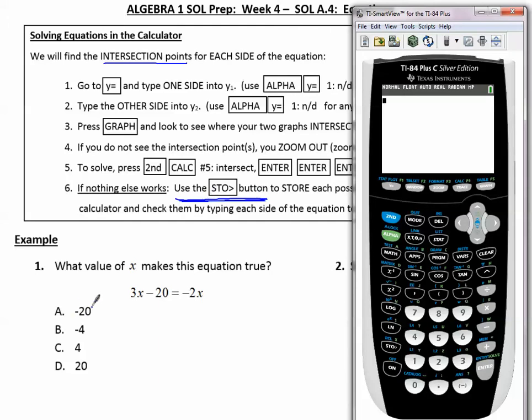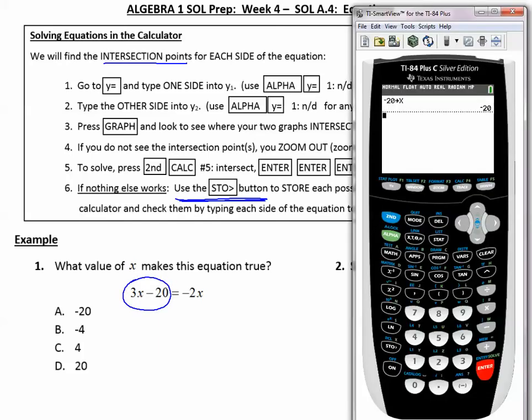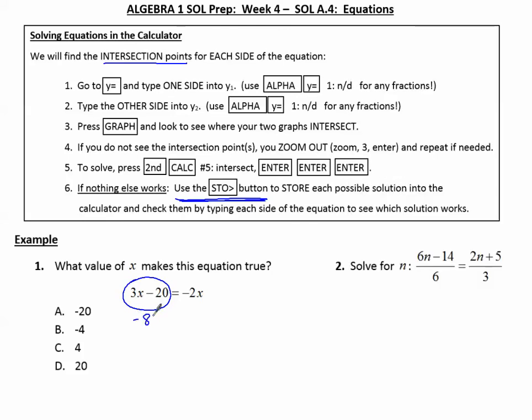So I'm going to start with the first one, negative 20. I'm going to type in my calculator negative 20, and store, and then x, press enter. Then I'm going to type in this side of the equation and see what my calculator says. 3x minus 20, enter. I see negative 80. Let's write that down, negative 80.